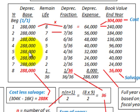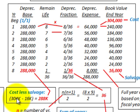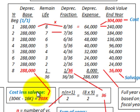The depreciation base is the cost less the salvage value. We take cost of $304,000 less the salvage value of $16,000, which gives us our depreciation base of $288,000. The sum of the years method requires subtracting out the salvage value from the initial cost, giving us our depreciation base of $288,000.